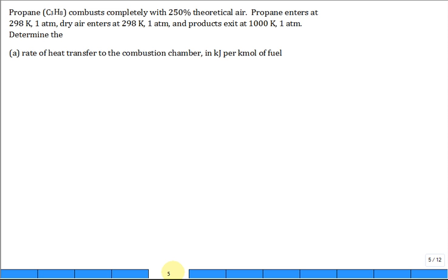Propane C3H8 combusts completely with 250% theoretical air. Propane enters at standard 298 Kelvin, dry air enters at 298 Kelvin, and products leave at a toasty 1000 Kelvin. Determine the rate of heat transfer to the combustion chamber in kilojoules per kilomole.